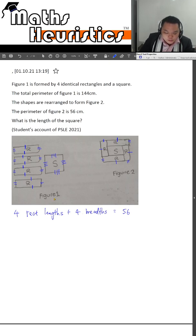Now in figure 1, how can we find out the length of the square? Since we know that the total parameter here is 144 cm, we can remove the 8 of these rectangular lengths and rectangular breaths.